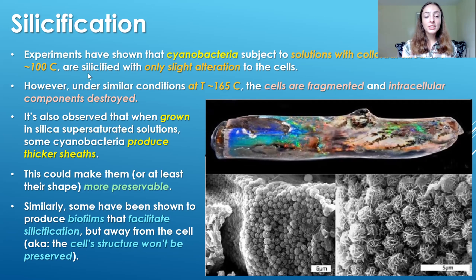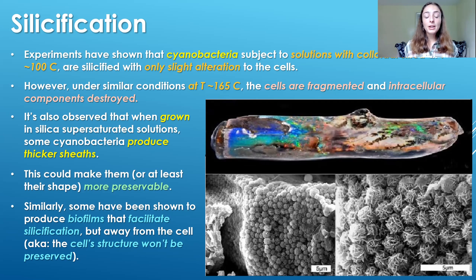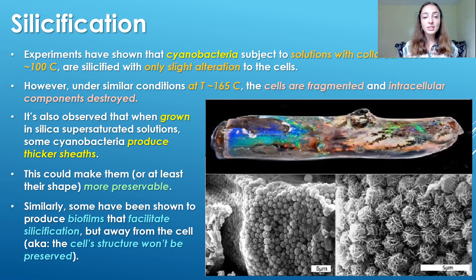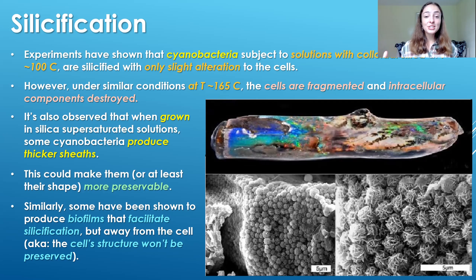A similar response is seen with biofilms instead of sheaths — some bacteria produce biofilms to facilitate silicification away from the cell, protecting the cell itself from silicification. However, in this case the cell's structure will probably not be preserved, because the mineralization is happening away from the cell rather than around the cell on a sheath that outlines the cell's structure.